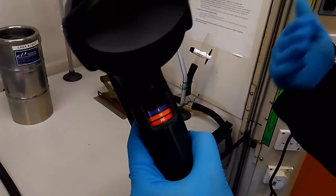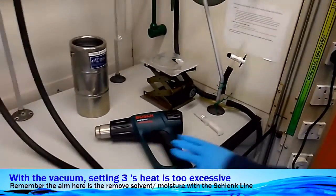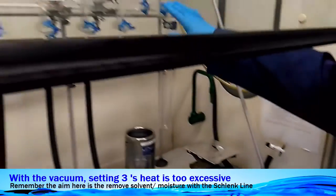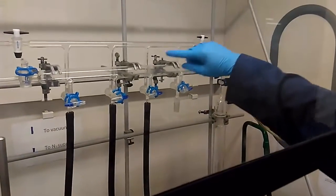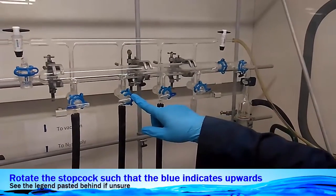Setting 3 is too hot for our experiment, and setting 1 is not enough. Here you see the Schlenk line with the vacuum and the nitrogen, and here you see the two-way manifold.